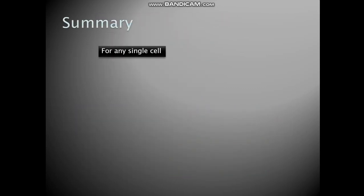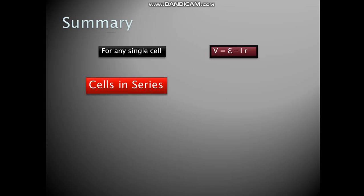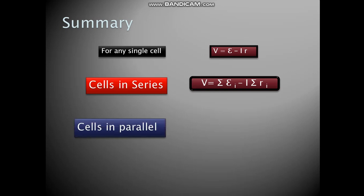In summary, for any single cell, we have V is equal to E minus IR. Cells in series, you have V is equal to summation Ei minus I summation Ri. Cells in parallel, you have V is equal to Eequivalent minus I Requivalent.